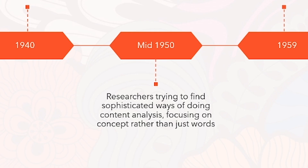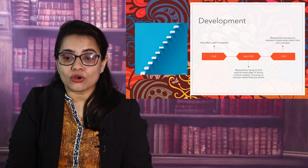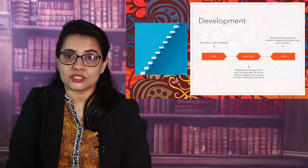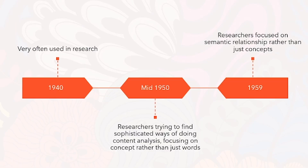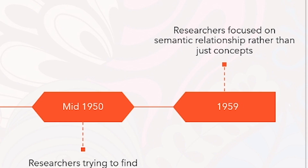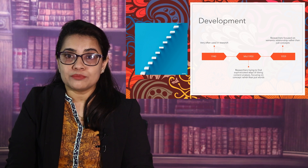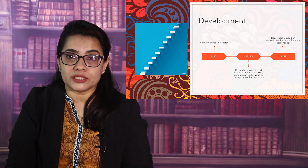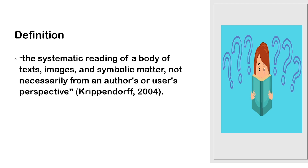During the mid-1950s, researchers tried to find sophisticated ways of doing content analysis, focusing on concept rather than just words. This concept advanced further, and in 1959 researchers focused on semantic relationships. This means that the researchers tried to develop the meaning of the data and the relationship between the words.